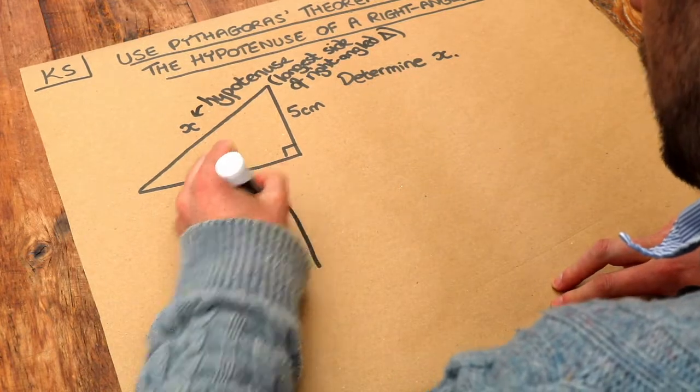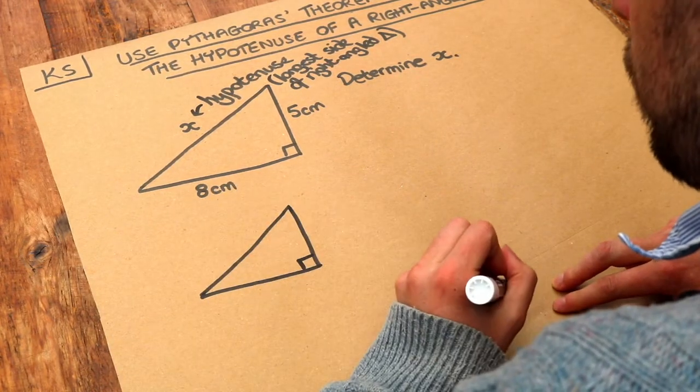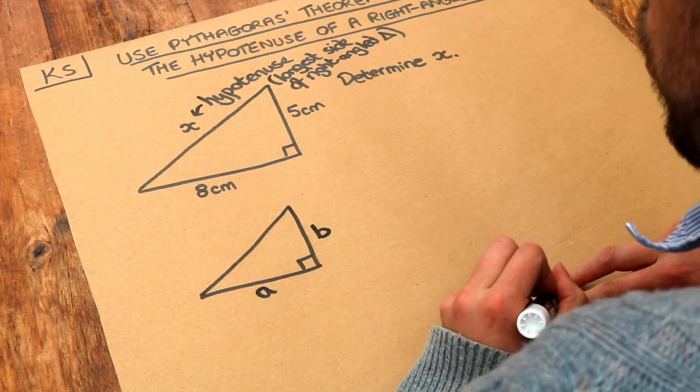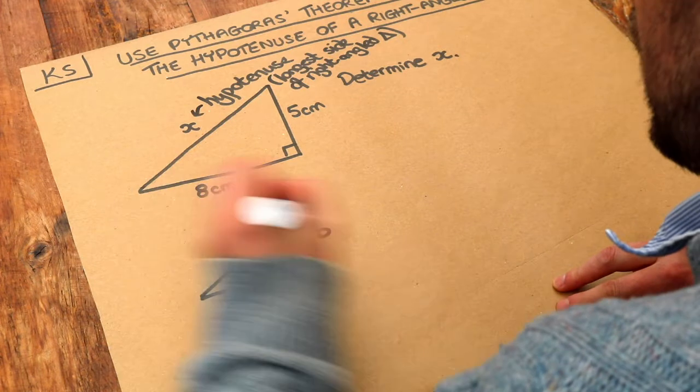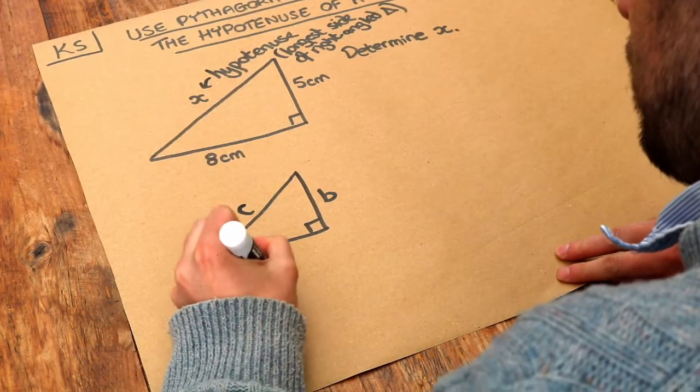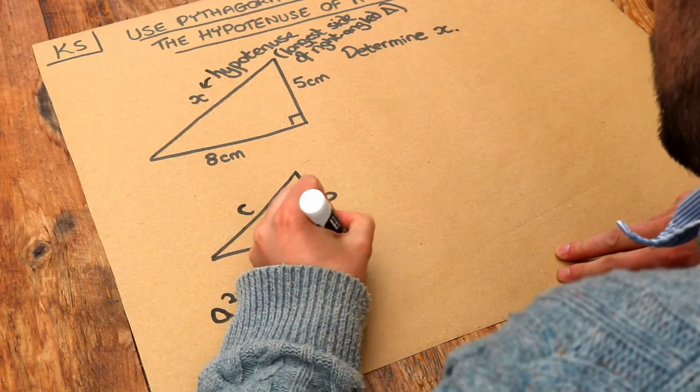If we have a right angle triangle and let's call the shorter sides A and B, doesn't matter which way around, and the longest side, the hypotenuse, is C, then Pythagoras theorem is that A squared plus B squared is equal to C squared.